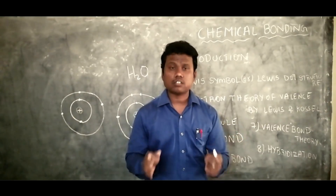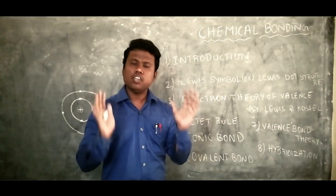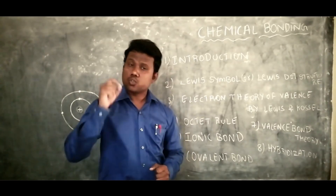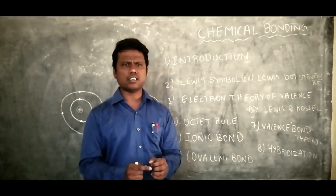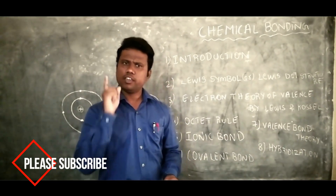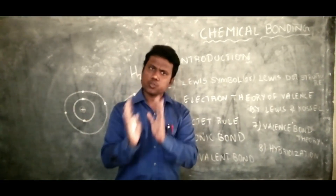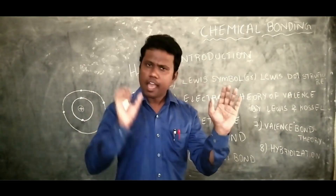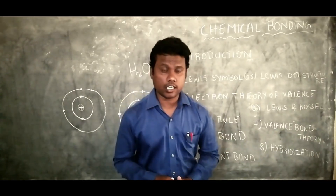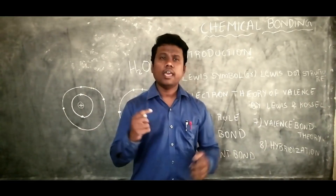Elements are combined by the chemical process, not by the physical process — that is why our chapter is named chemical bonding. If we want to separate elements from a molecule or compound, we have to use the chemical process. To separate sodium and chlorine from sodium chloride, it can only be done by chemical means.